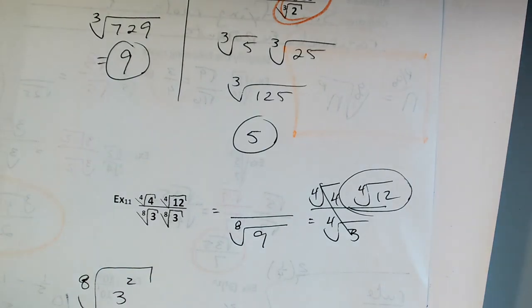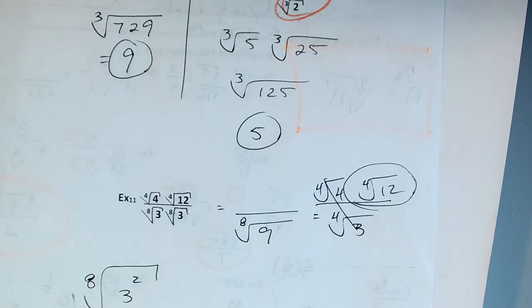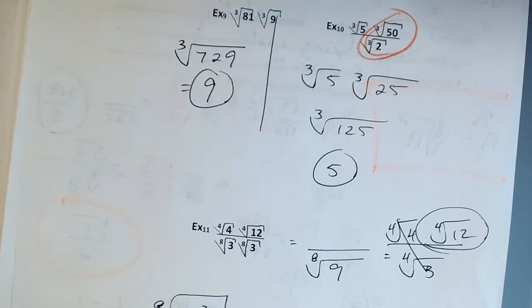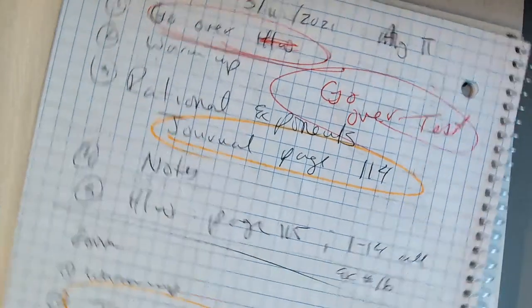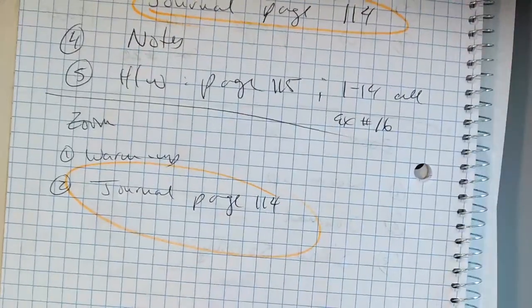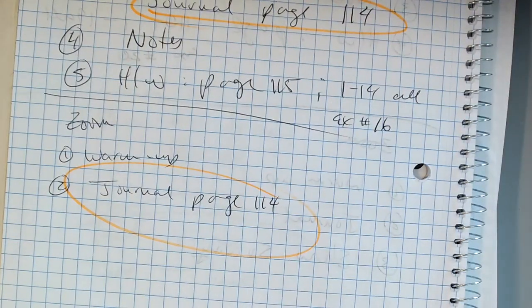It's a tough assignment today, but I'll help you as much as I can. This is hard stuff, and I promise to help you. So my assignment for you today — we've got about 10 minutes. Page 115 out of your journal today. We're going to do 1 through 14 all, and the extra credit is number 16.